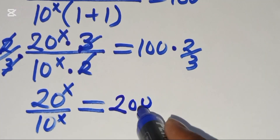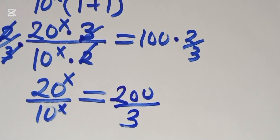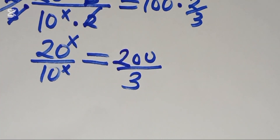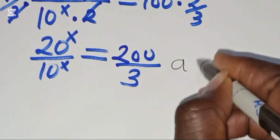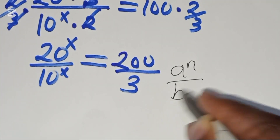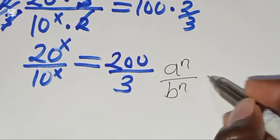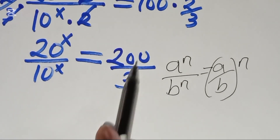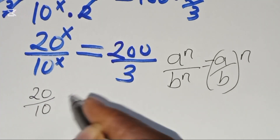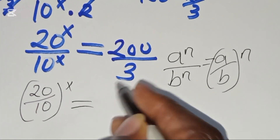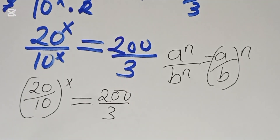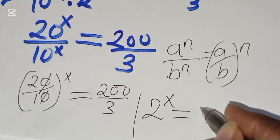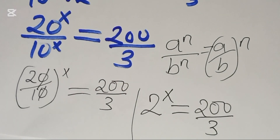After multiplying both sides by 2/3, we have 20^x divided by 10^x equals 200/3. Now, using the exponent law that a^n divided by b^n equals (a/b)^n, we can rewrite the left side as (20/10)^x, which simplifies to 2^x = 200/3.